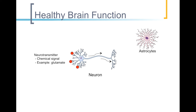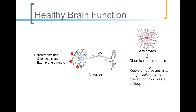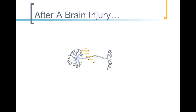Finally, astrocytes are arguably the most important type of glial cell, and they maintain homeostasis in the brain. They recycle neurotransmitters, especially glutamate, which we've seen, and prevent the toxic buildup of wastes, which is critical to proper signal conduction by the neurons.